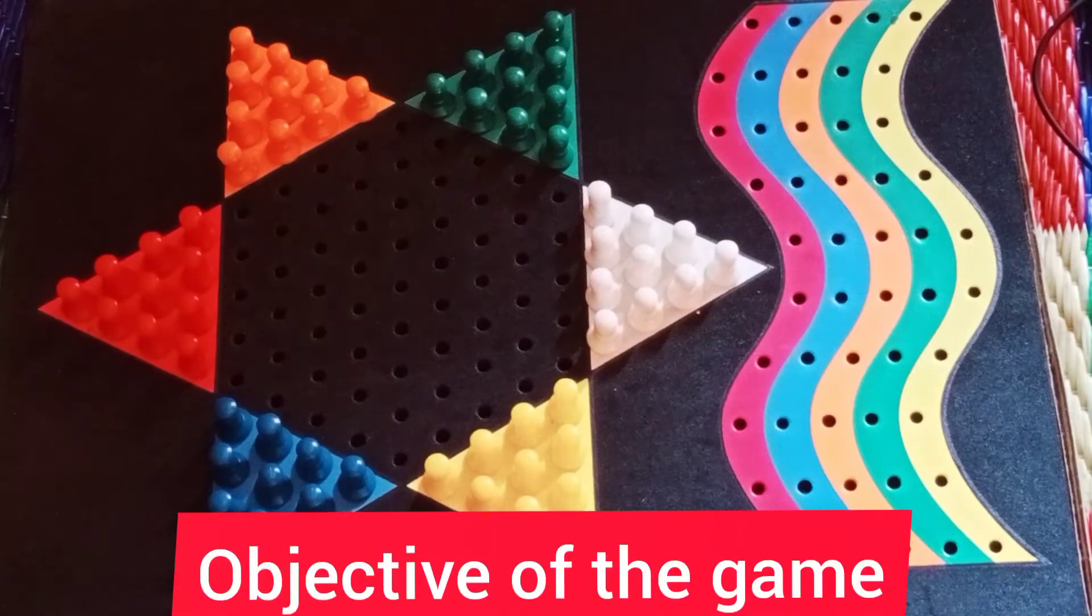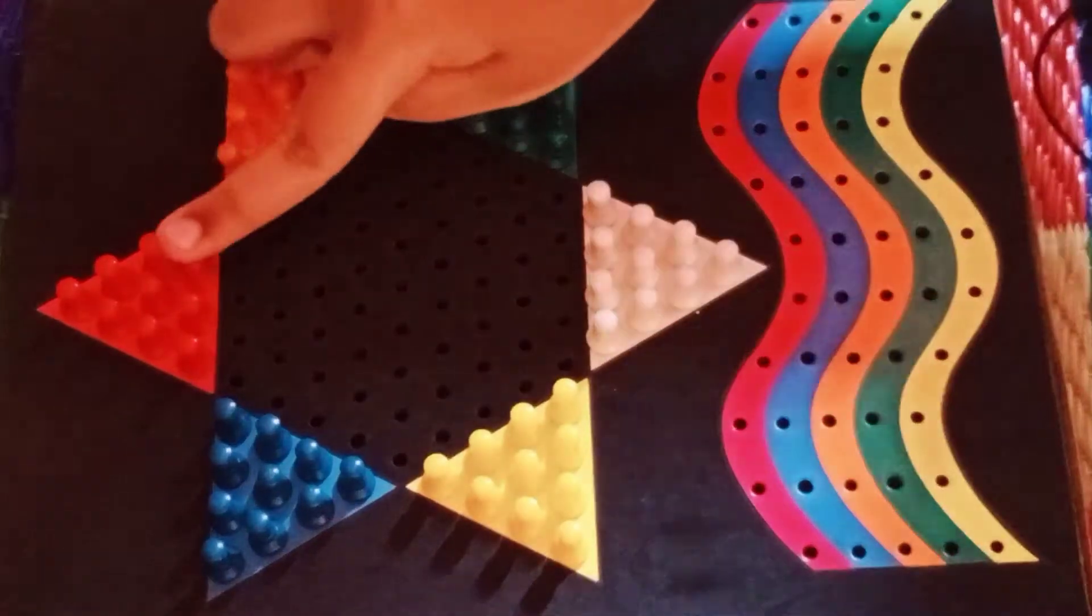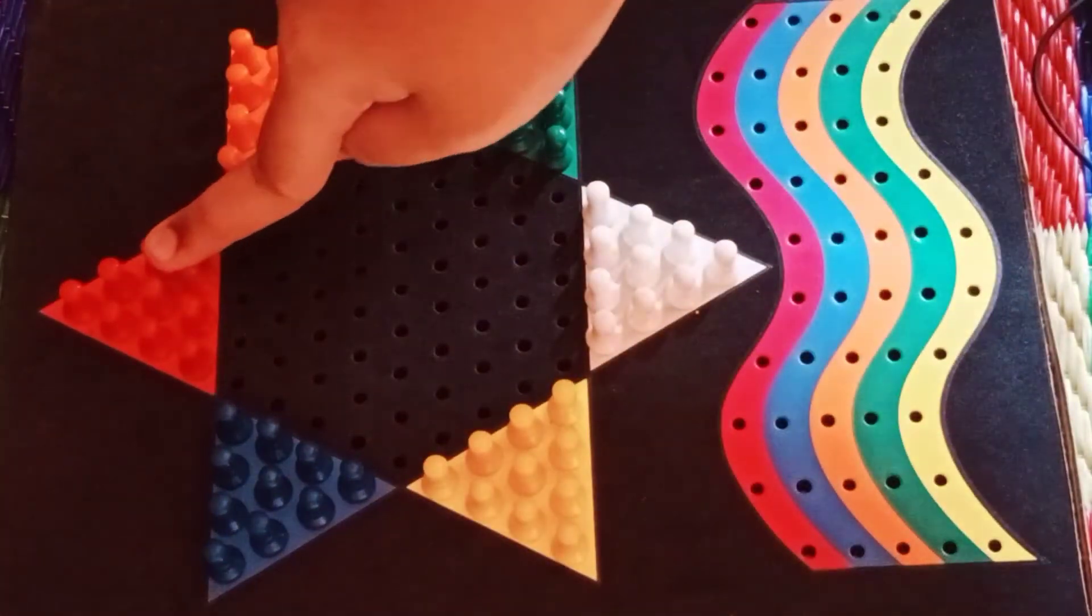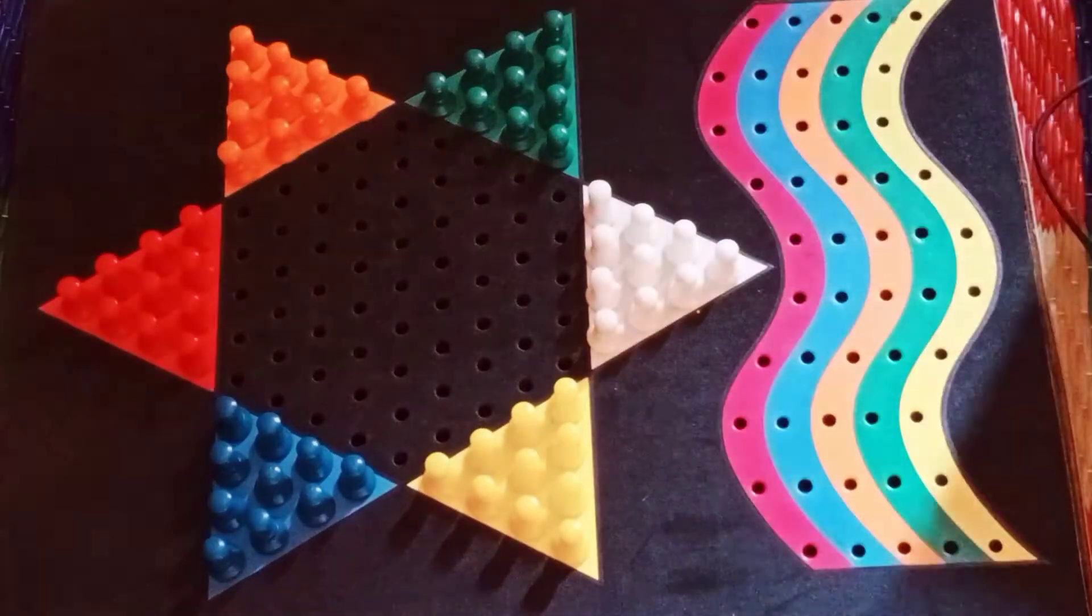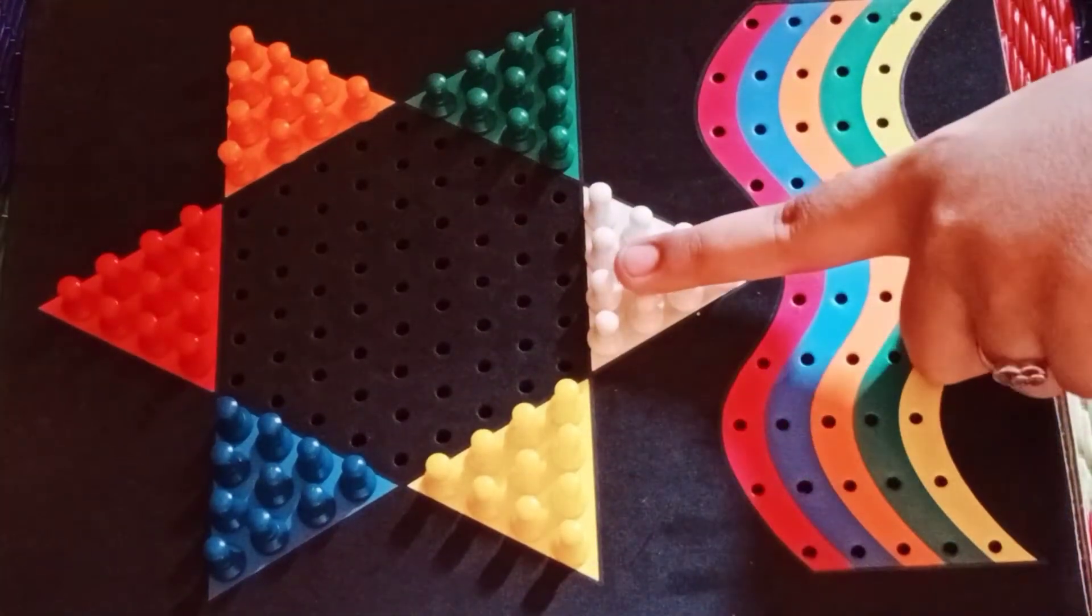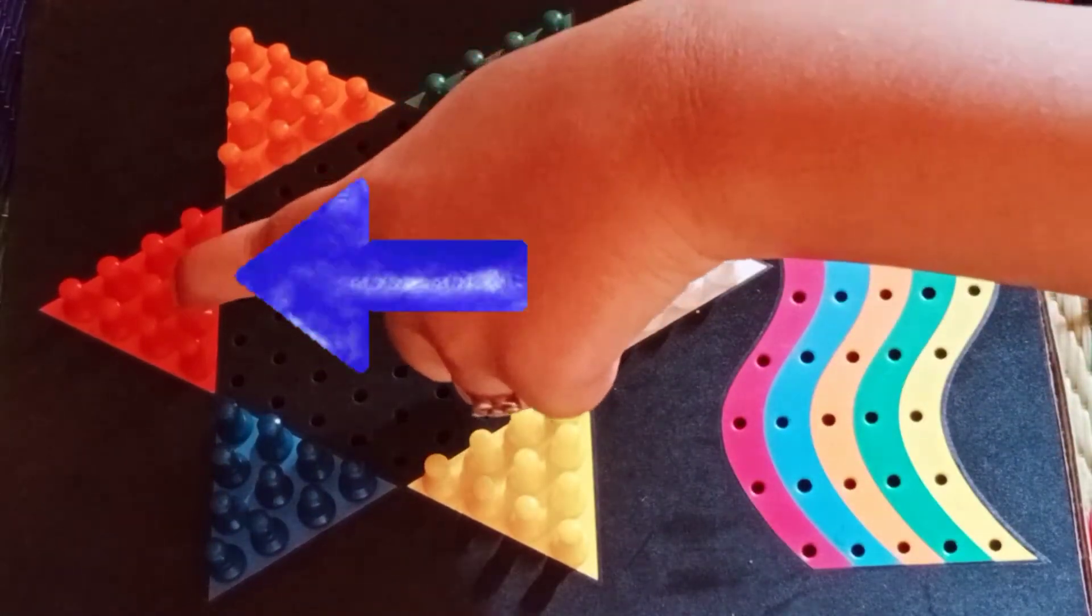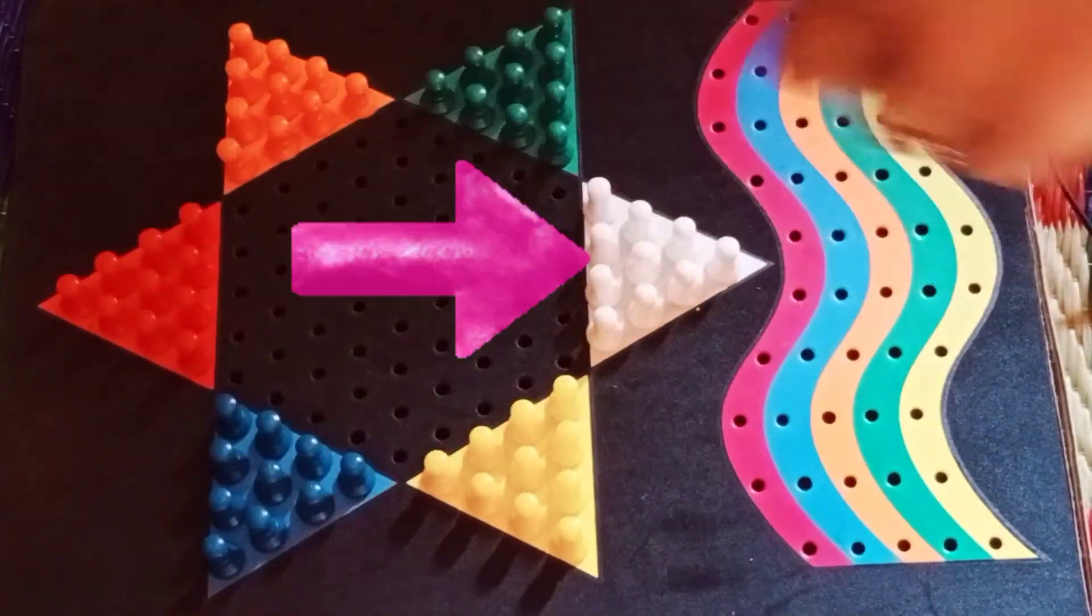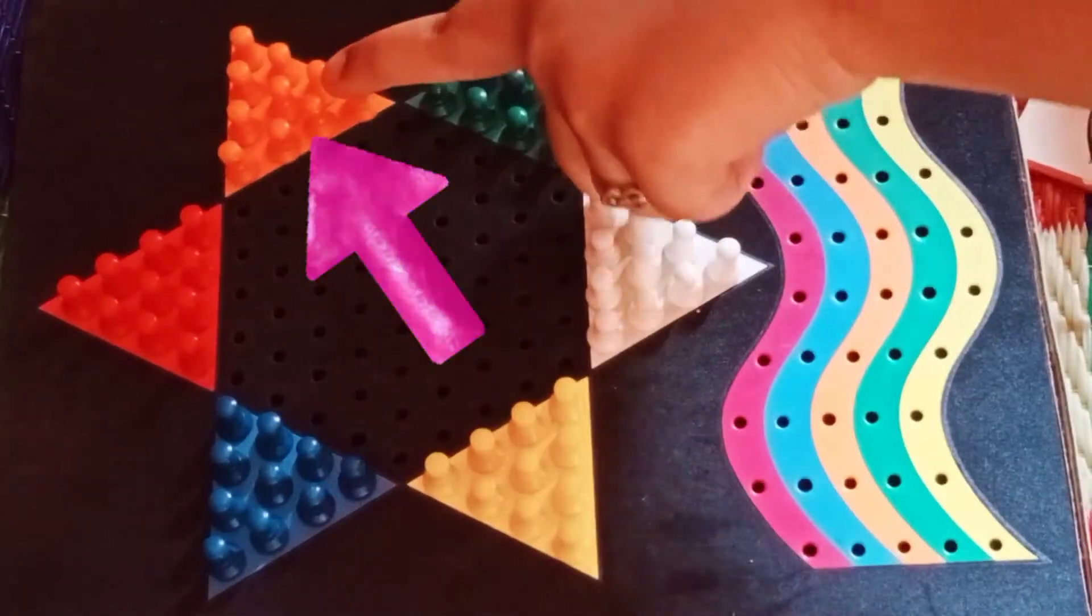game is to move all your 10 pegs to the point of the star directly across from your starting point. Suppose if a person is white color, then it has to go to the red. And if you are red, you have to go to the white. Yellow will go to orange, orange